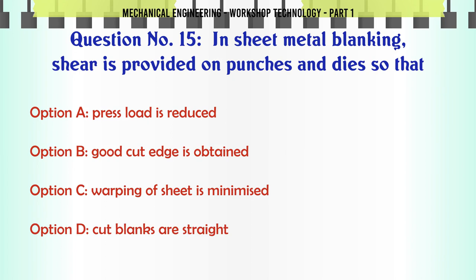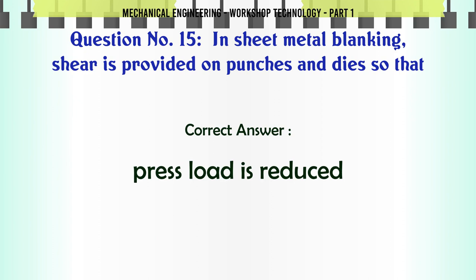In sheet metal blanking, shear is provided on punches and dies so that: A. Press load is reduced. B. Good cut edge is obtained. C. Warping of sheet is minimized. D. Cut blanks are straight. The correct answer is: Press load is reduced.